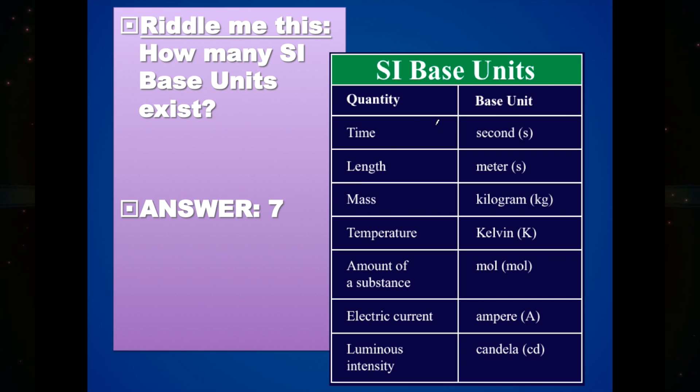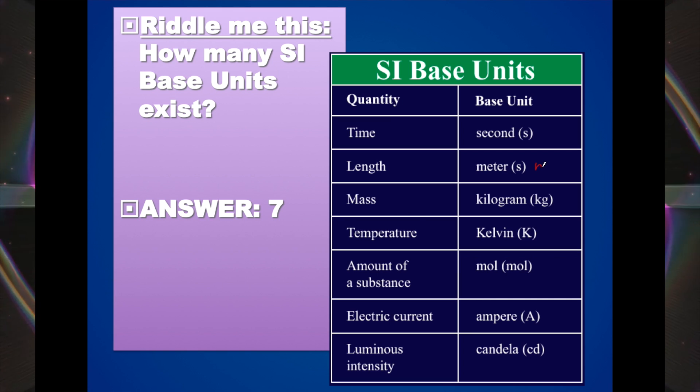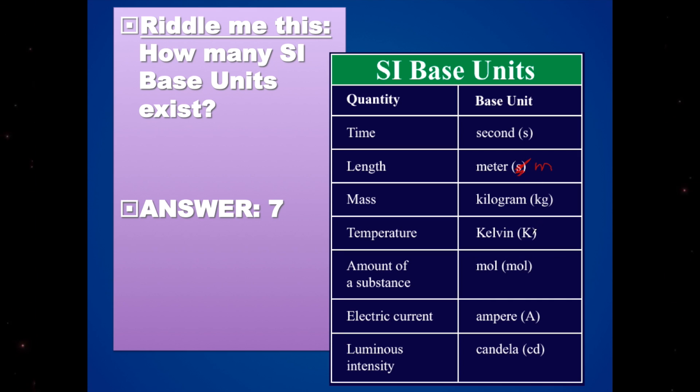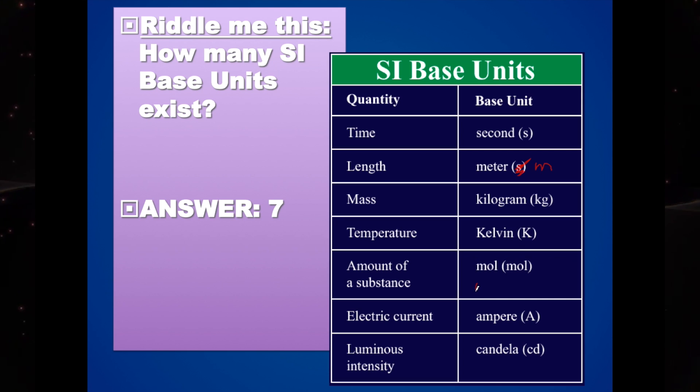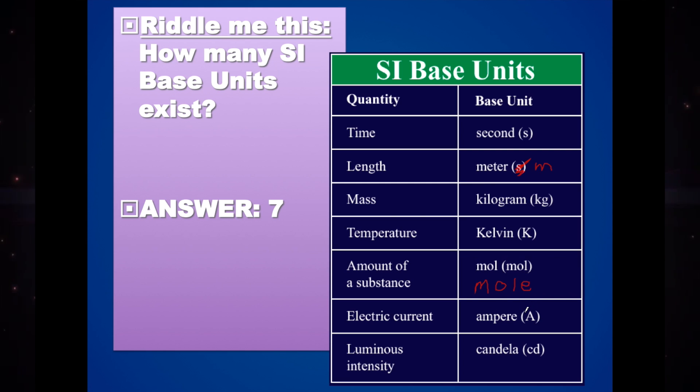I want to point those out to you. So time is fine. The base unit is second abbreviated with a little s, but then length, the base unit is the meter but it's abbreviated with a little m, not an s. And kilogram is okay, Kelvin is okay, capital K for Kelvin. The mole is written M-O-L-E. And the abbreviation is M-O-L, not much of an abbreviation, but there it is. And ampere, sometimes said amps for short, is abbreviated capital A. And then candela is CD. And candela is probably the least used one in your basic physics and chemistry courses.